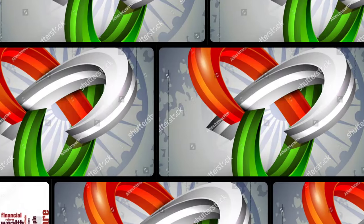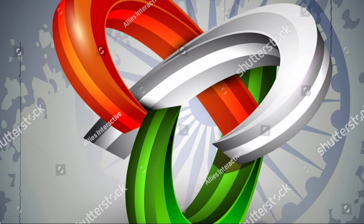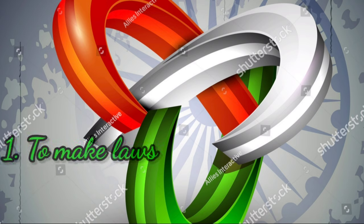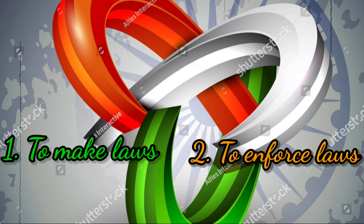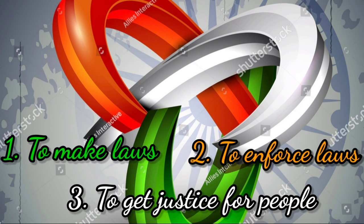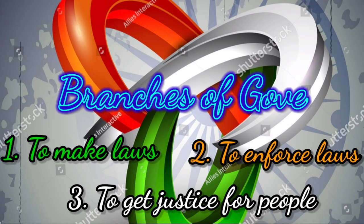These governments have three types of work to do. Number one: to make laws, which means the legislature. Number two: to enforce laws, which means the executive. And to get justice for people, which means the judiciary. These three are the branches of government.